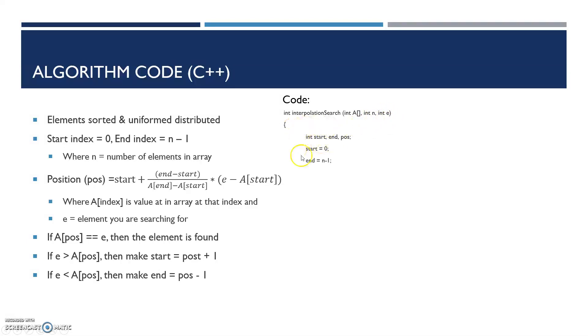You initialize your variables: an integer for start, end, and position, to be used for indexes. With our algorithm, start is 0 and end is n minus 1.